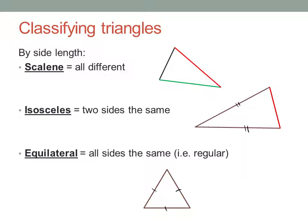And if all three sides are the same, it's called equilateral. So a regular triangle is called an equilateral triangle.